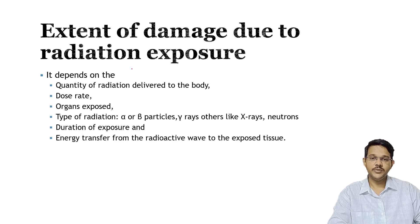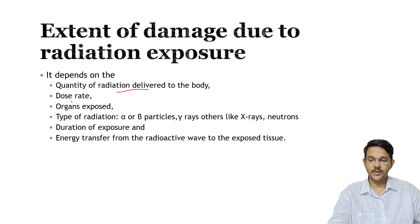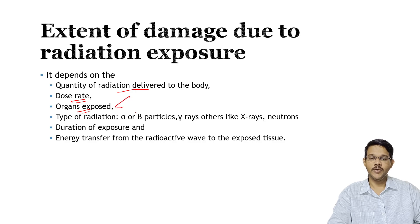The extent of damage from radiation exposure depends on different factors like the quantity of radiation delivered to the body, which type of radiation is delivered, the dose rate — how much radiation the person is exposed to — and which organs are exposed. Radiation causes more damage to organs in a state of active cell multiplication, like bone marrow.